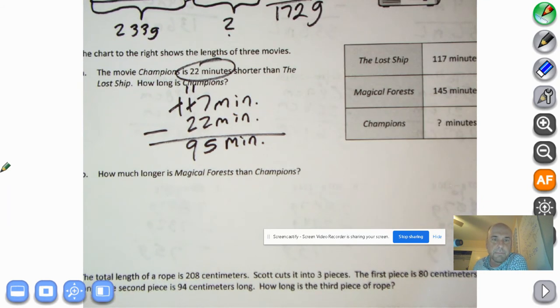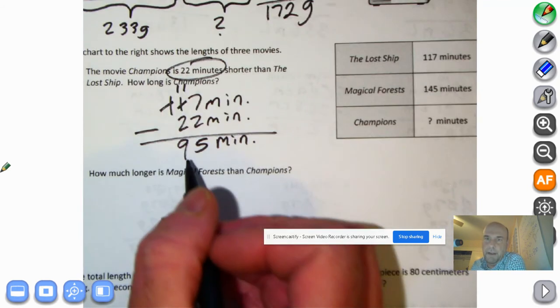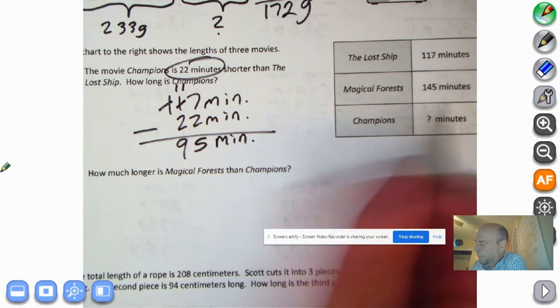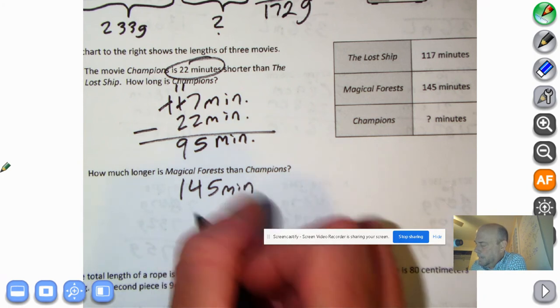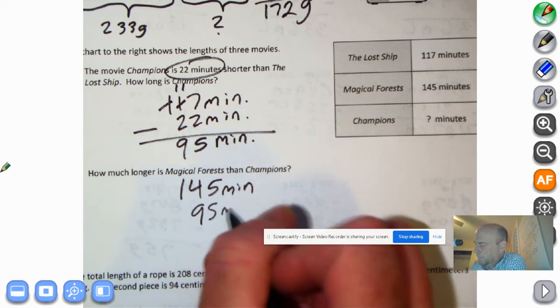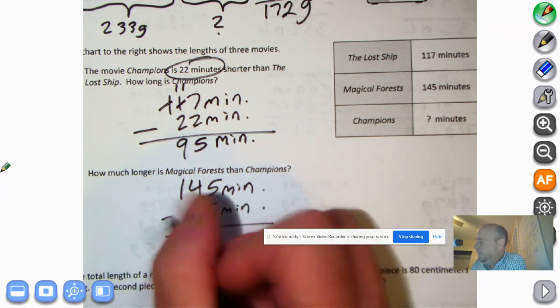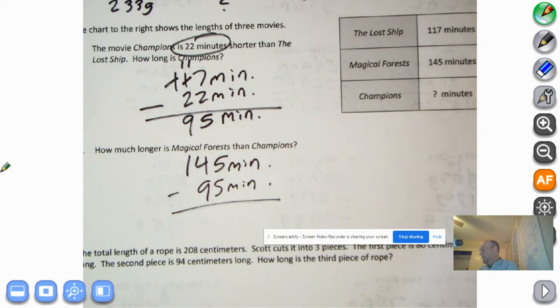How much longer is Magical Forest than Champions? Well, Champions is 95 minutes. The Magical Forest is 145 minutes. It's a big, long movie. And we'll subtract the 95 minutes. And now it is time for all good students that want to learn this math. It's time for them to pause. They got to pause. Try on their own. Even if you don't succeed, even if you come back and you see you got the problem wrong, it's really important that you try on your own.